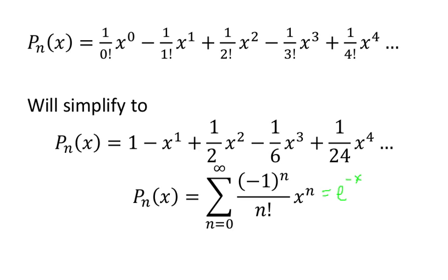The series is very similar to e to the positive x. If e were to the positive x, I believe these negatives would be positive, because the sign would never change for all the derivatives — the derivative of e^x is e^x. So since there would be no sign change, if these were all pluses, this would actually equal e to the positive x. E to the negative x just gives us these alternating signs. Likewise, if it were e to the 2x, you would have negative 2x to the first, negative 2 squared which is 4, negative 2 cubed, and so on.